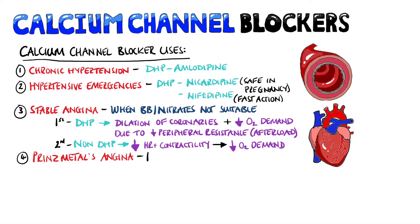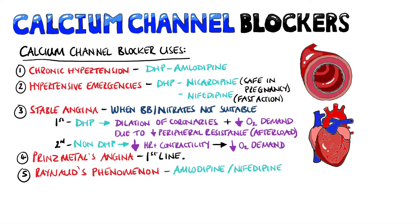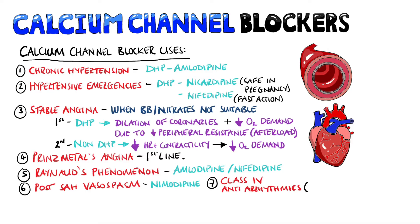Prinzmetal's angina — angina from vasospasm in the coronary vasculature — has calcium channel blockers as its first-line treatment. Other uses include Raynaud's phenomenon, particularly amlodipine or nifedipine, and post-subarachnoid hemorrhage vasospasm that can lead to brain ischemia, where nimodipine is usually the drug of choice. Due to their effects on conduction velocity, non-dihydropyridines also act as class 4 antiarrhythmic agents.